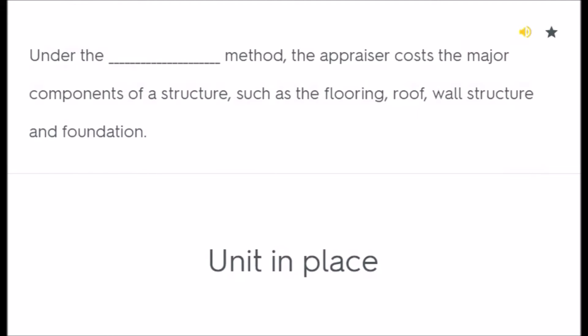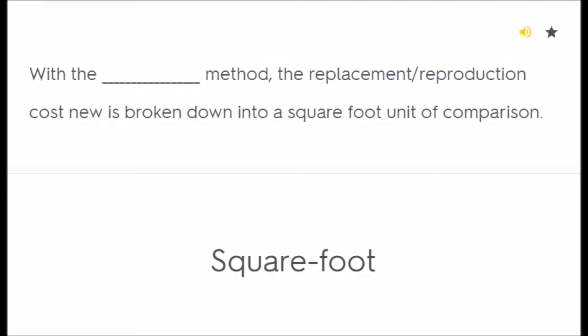Under the blank method, the appraiser costs the major components of a structure such as flooring, roof, wall structure, and foundation — unit in place method. With the blank method, the replacement or reproduction cost new is broken down into a square foot unit of comparison — square foot method.